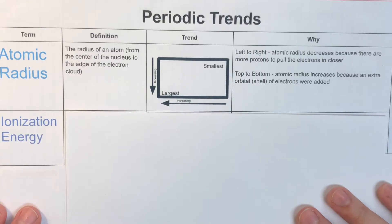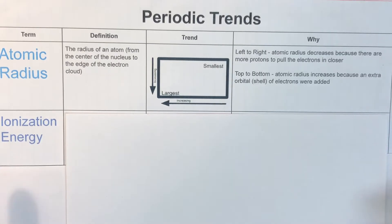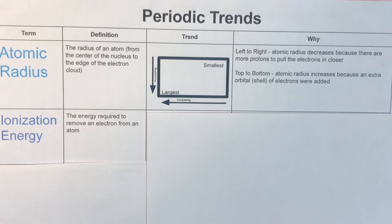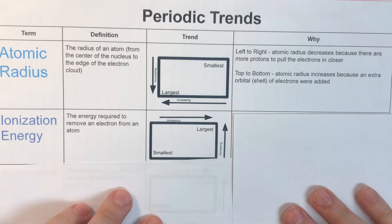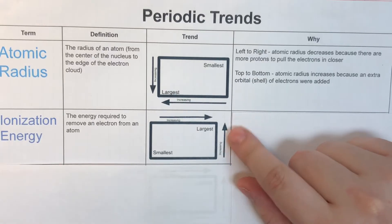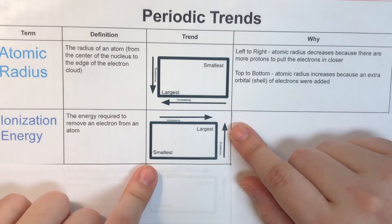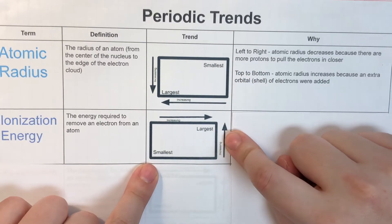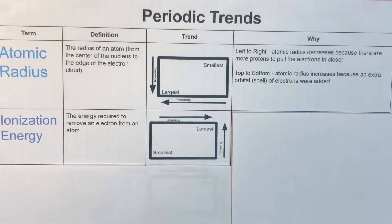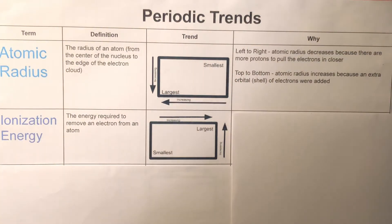The next trend we're going to talk about is ionization energy. We already know the root word — ion — and we're familiar with the word energy. Ionization energy is the energy required to remove an electron from an atom. We have the same diagram again, but you'll notice that the arrows are in different directions this time. The trend is still increasing in the direction of the arrow heads, but it is the exact opposite trend from atomic radius. My highest ionization energy is going to be my smallest atom, and my lowest ionization energy is going to be my largest atom.